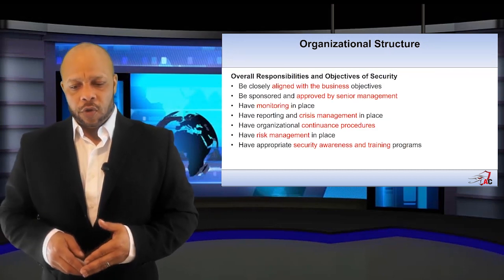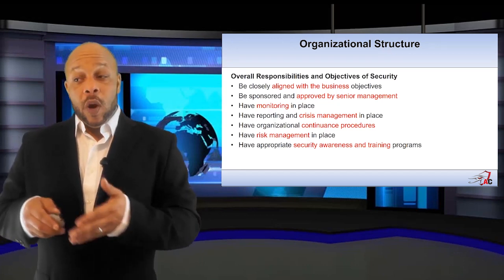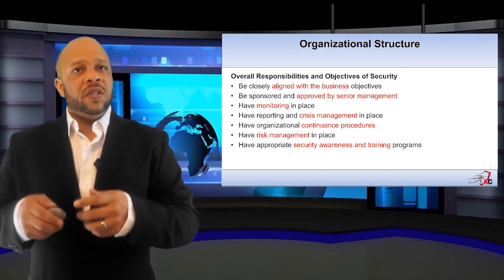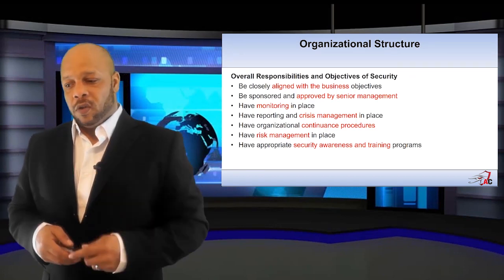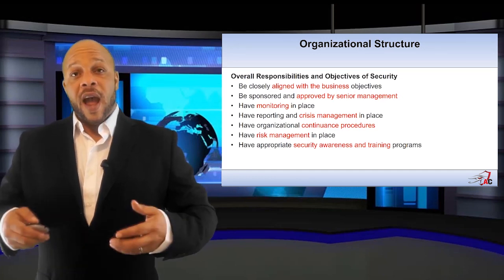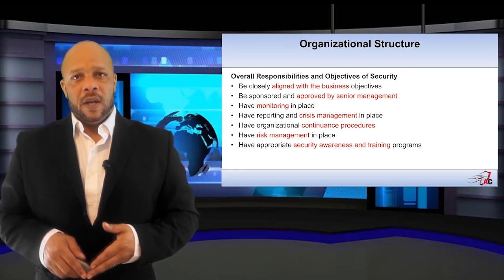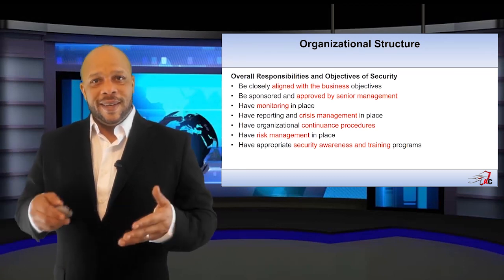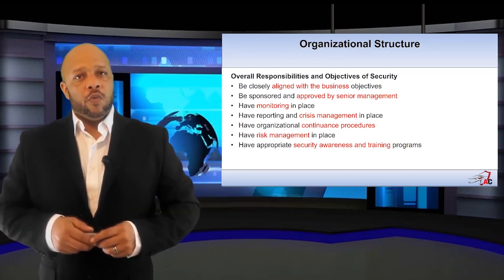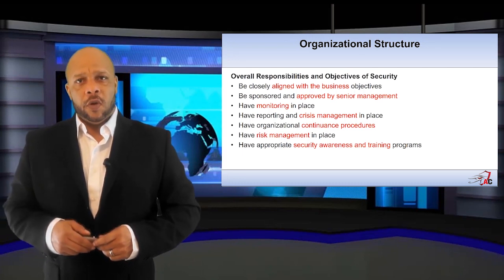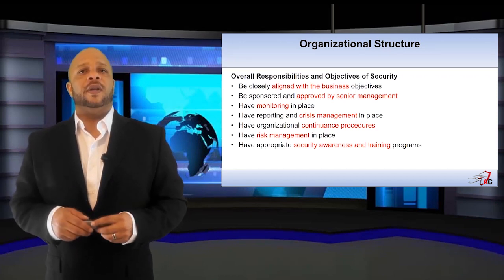When looking at our organizational structure, these are the things we need to keep in mind: they need to be closely aligned with those business objectives and have strong senior management sponsorship. We must identify a method to monitor our organizational structure as the organization continues to grow. How do we do crisis management? We need to identify an organizational continuity procedure — this is the same as a succession plan. We must have strong risk management in place and appropriate security awareness and training programs as part of everyday business within the organization.